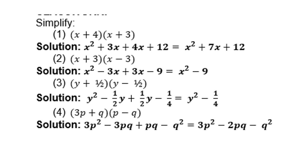Let's look at the following example. Simplify (x + 4)(x + 3). So x times x is x². X times 3 is 3x. 4 times x is 4x. 4 times 3 is 12. Then we collect 3x and 4x and it gives you 7x. Therefore, the answer is x² + 7x + 12.